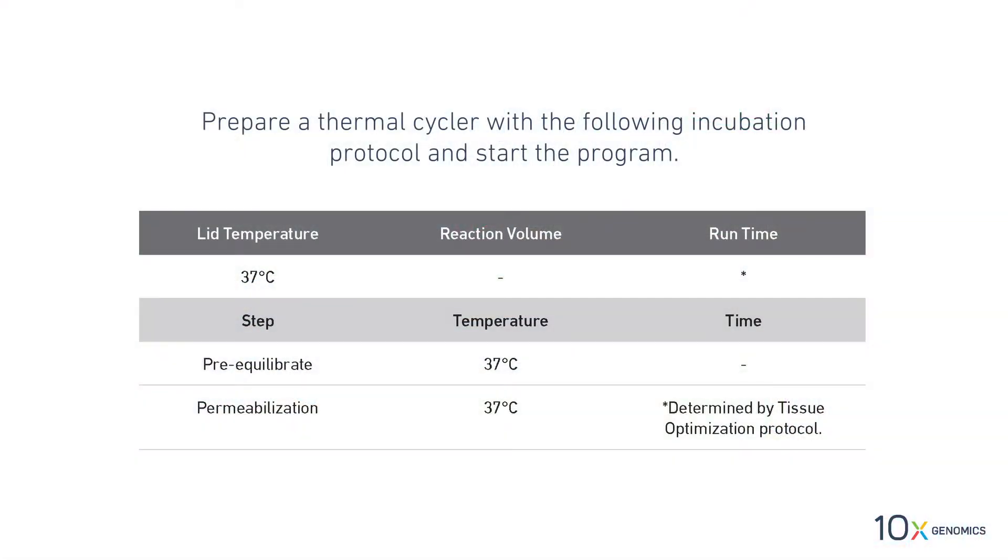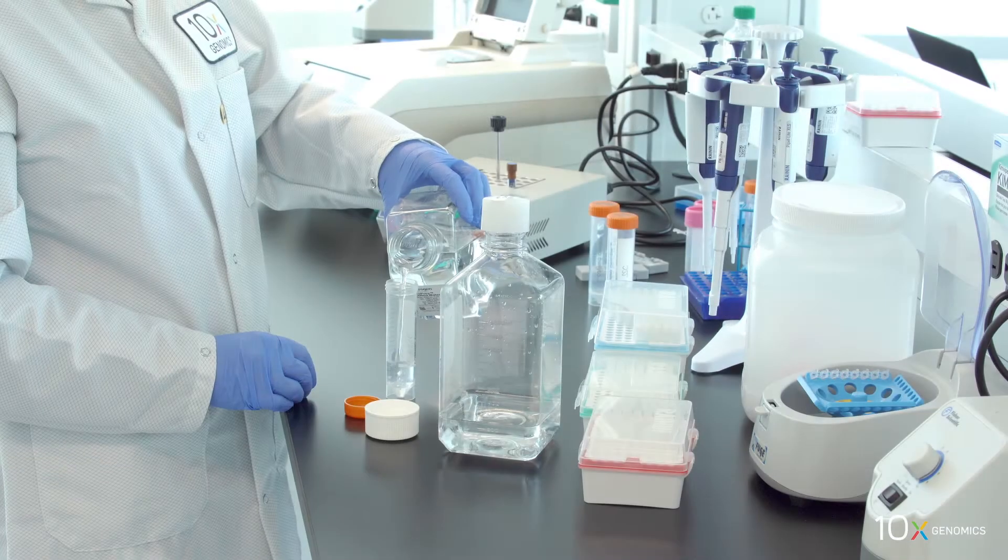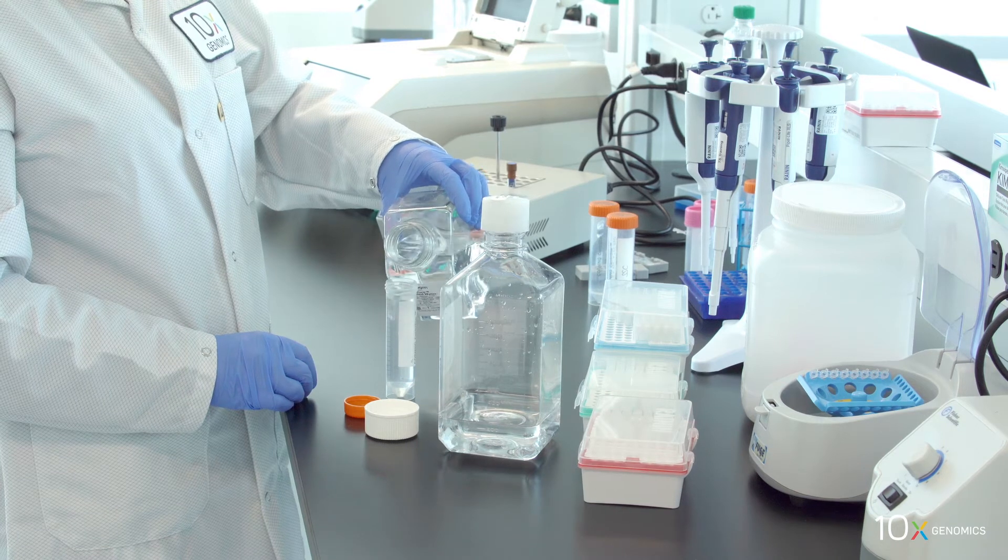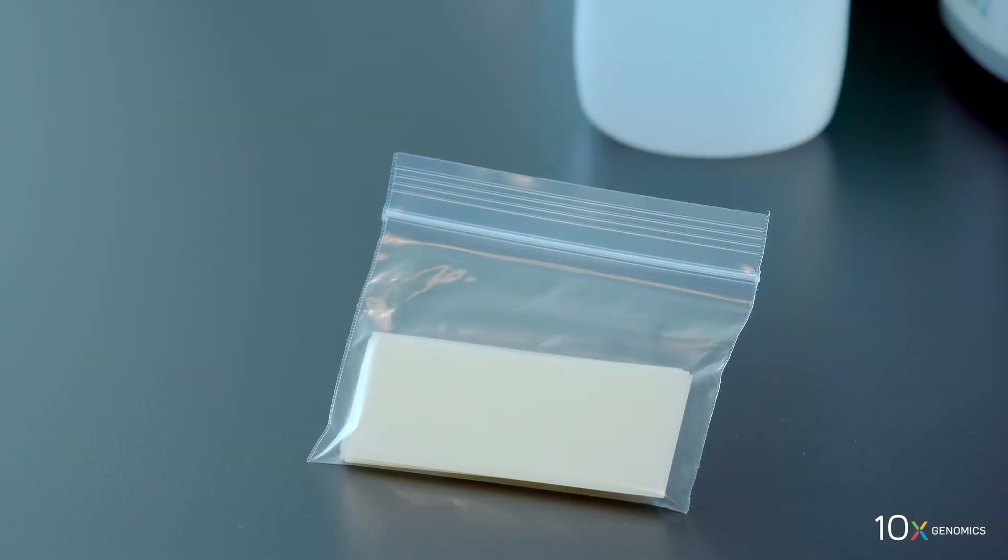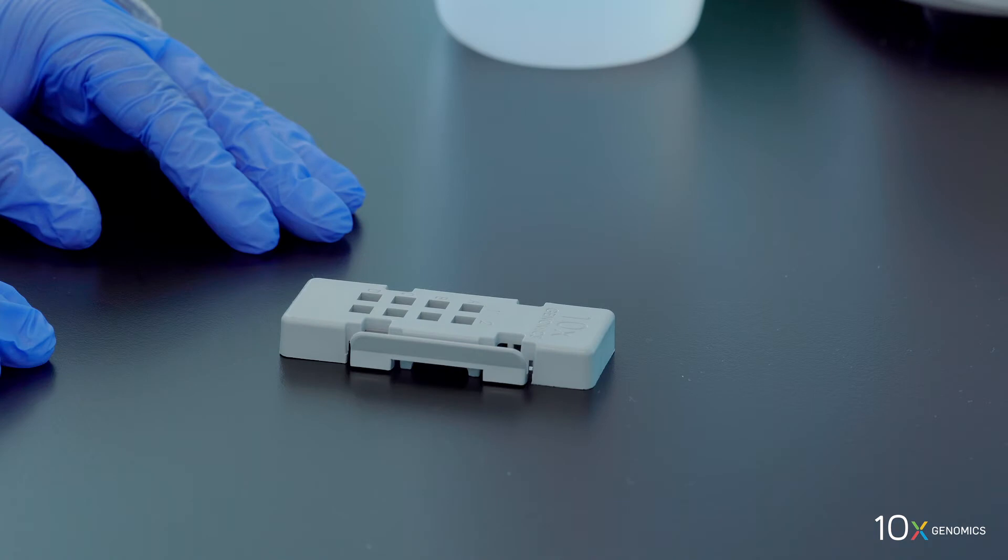Place a thermocycler adapter in the thermal cycler. Prepare a thermal cycler with the following incubation protocol and start the program. We have previously prepared 0.1x SSC and slide seals. Finally, we have the assembled slide in the slide cassette flat on the bench. We are ready to permeabilize the tissue.